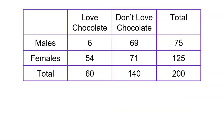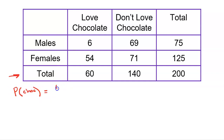Here is the actual two-way table that data came from. I want you to be able to read this and see the numbers I'm looking at. First I look at the total — this is the marginal. 60 out of 200 total people like chocolate. So the proportion of people that like chocolate out of everybody is 60 out of 200, and of course that is my 30%.